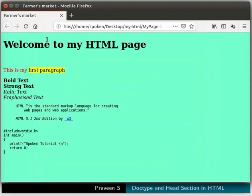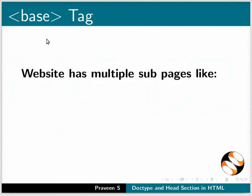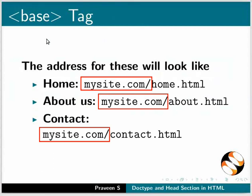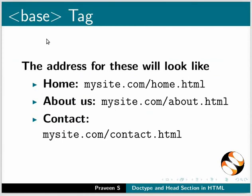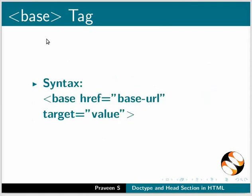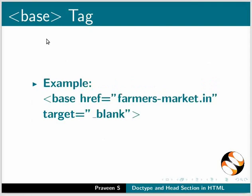Next, let us see what a base tag does. A website may have multiple sub-pages like Home, About Us, and Contact. The address for these will appear as shown. In this case, the base URL mysite.com will be common. We can use the base tag to define the base URL for the site or its content. This is the syntax, and here is an example.